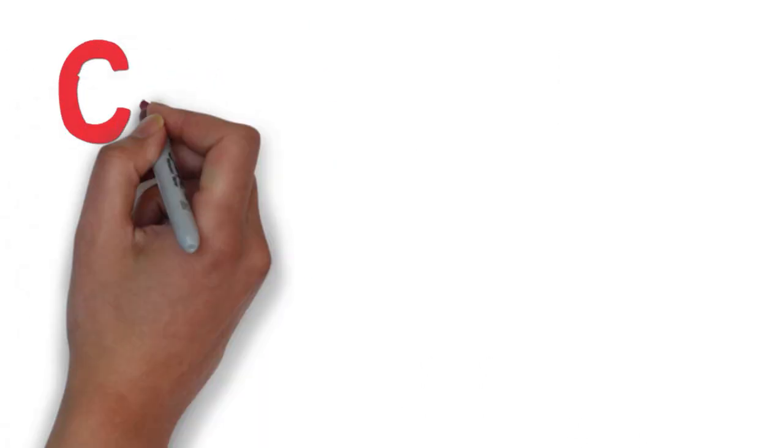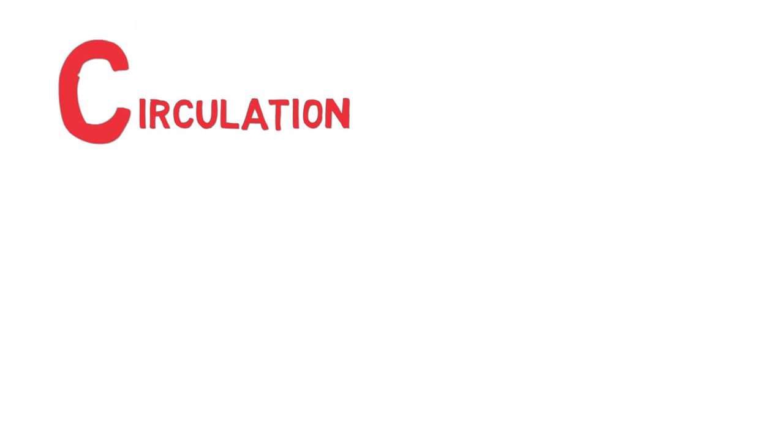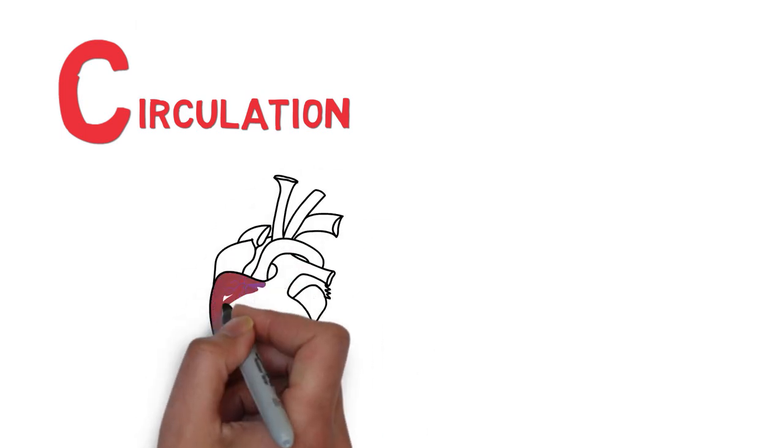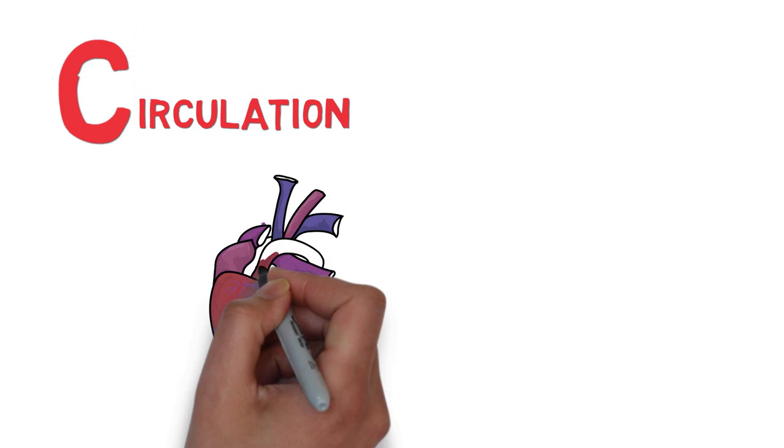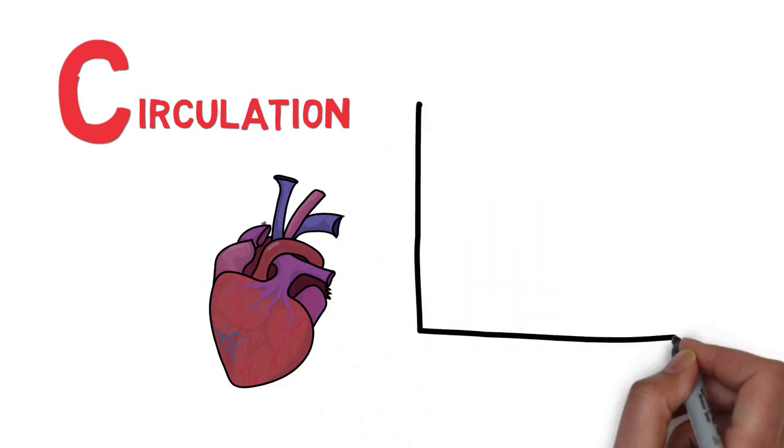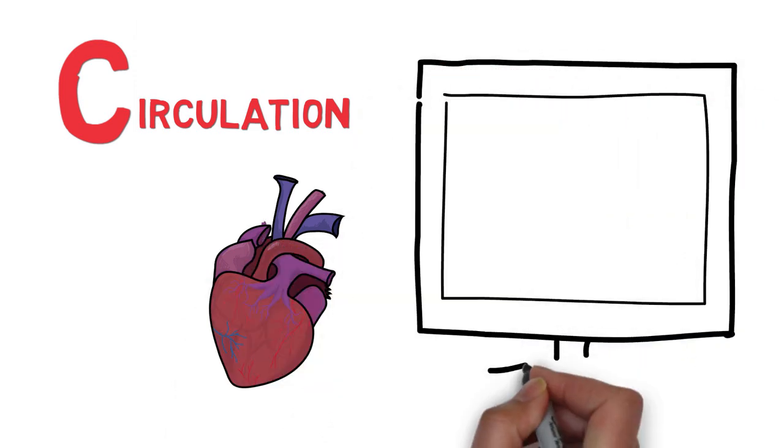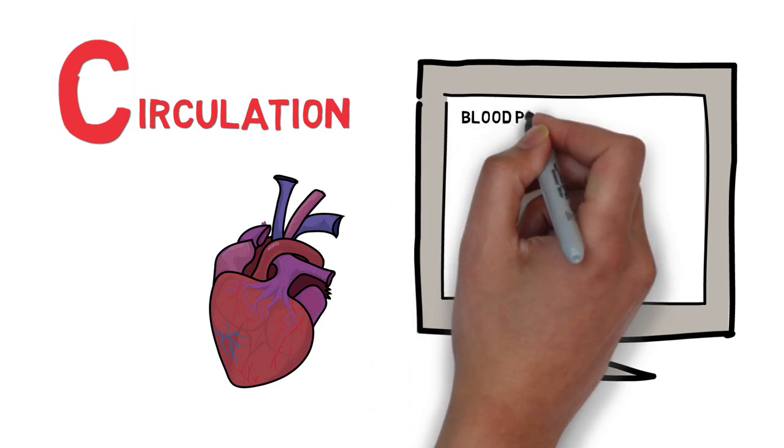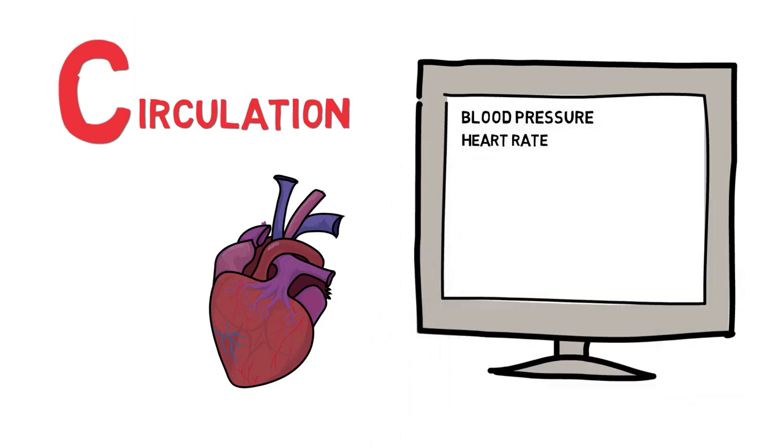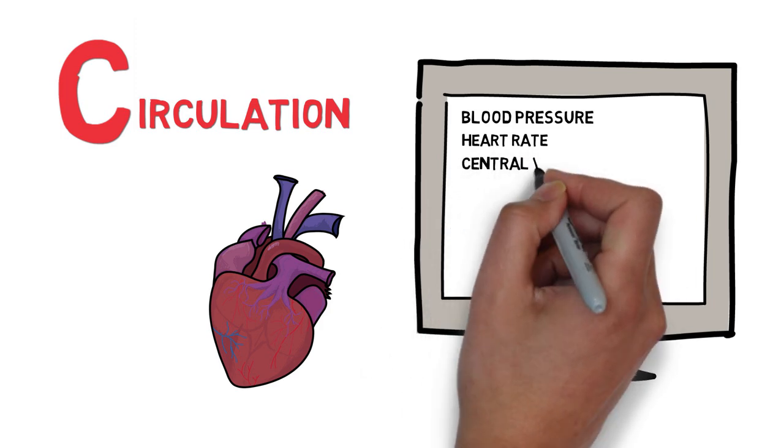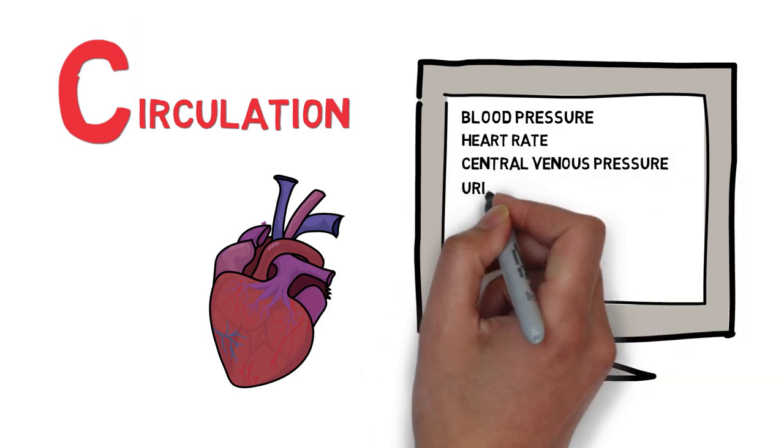C is for circulation. We made sure oxygen can enter and be used by the lungs in section A and B. Now we need to check if it can get to our vital organs like the heart, brain, and kidney. For this, we need an adequate cardiac output, being blood pressure and heart rate. Other hemodynamic parameters to assess are central venous pressure, inflated jugulars, and urine production.